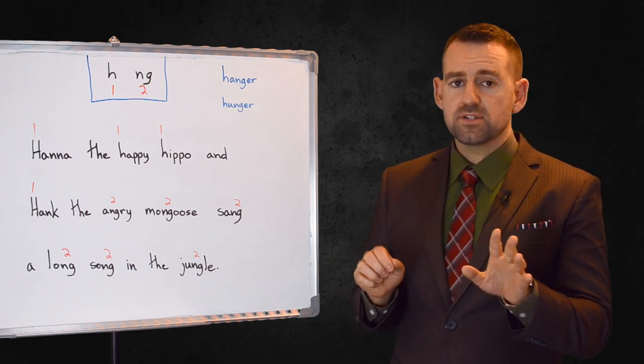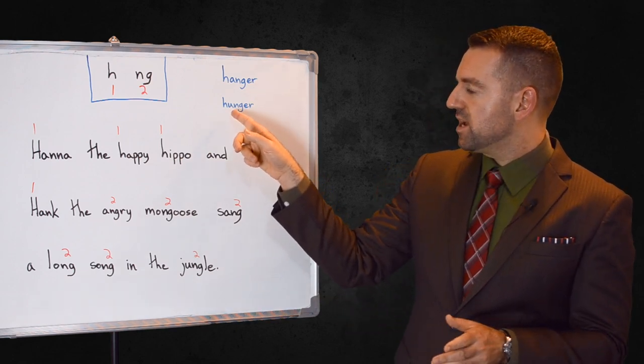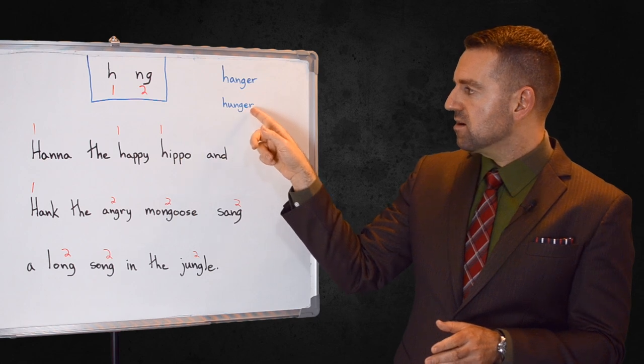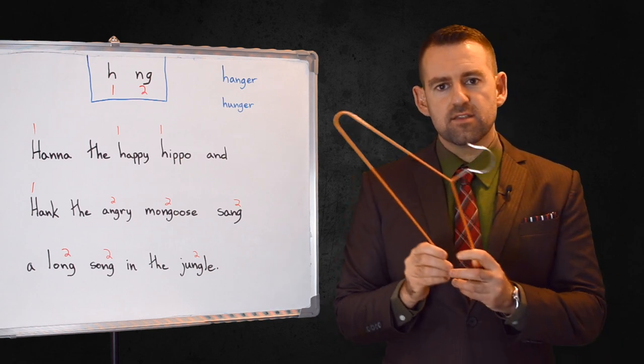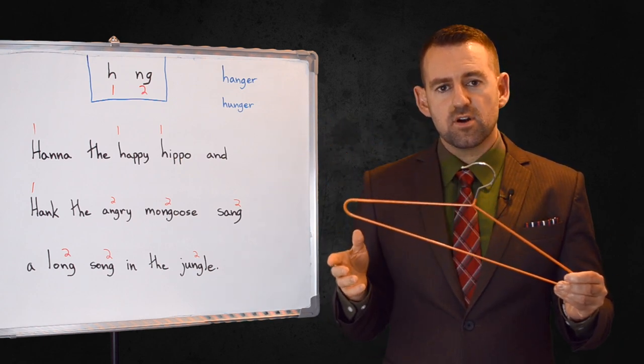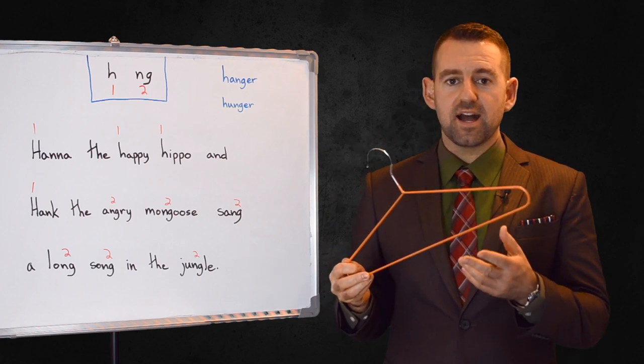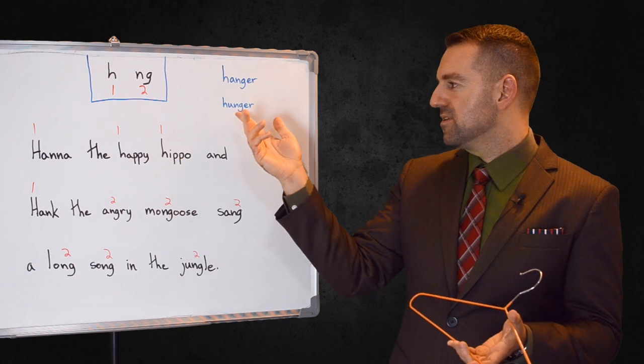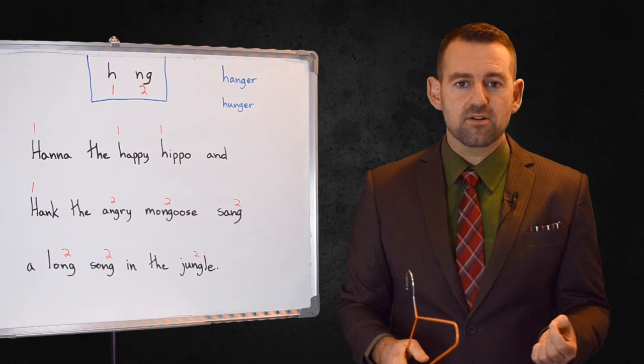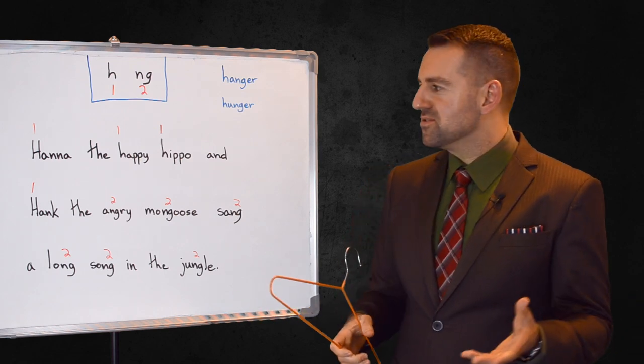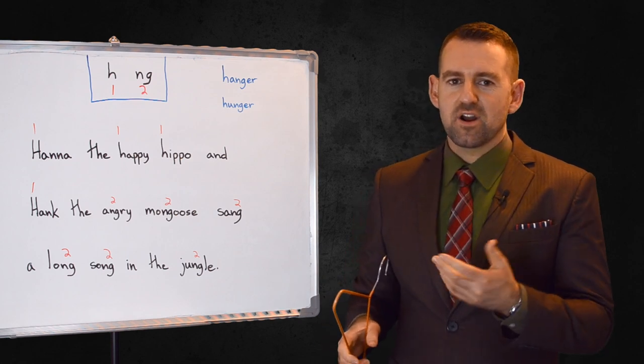But sometimes that's not the case. For example, look at these two words. Here we have hunger. And here we have hanger. So this is a hanger. You hang your clothes on a hanger. It's not a hanger, it's just a hanger. So there's only one letter difference but we say it very differently. Hanger and hunger. That's English. Welcome to the world of English that doesn't make any sense. But I'm trying to make it make sense. That's why I started my company, to try to help you learn English fast.